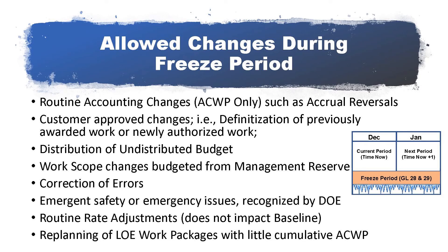Level of Effort, or LOE, work packages earn their value, or BCWP, simply by the passage of time. Therefore, the reporting of BCWP may not necessarily mean that the work in the LOE work package has actually started. The only measure of whether an LOE work package has begun is the reporting of ACWP. In cases where an LOE work package has cumulative BCWS and BCWP reported but very little or zero reported ACWP, it is permissible to re-plan that work package in the freeze period.